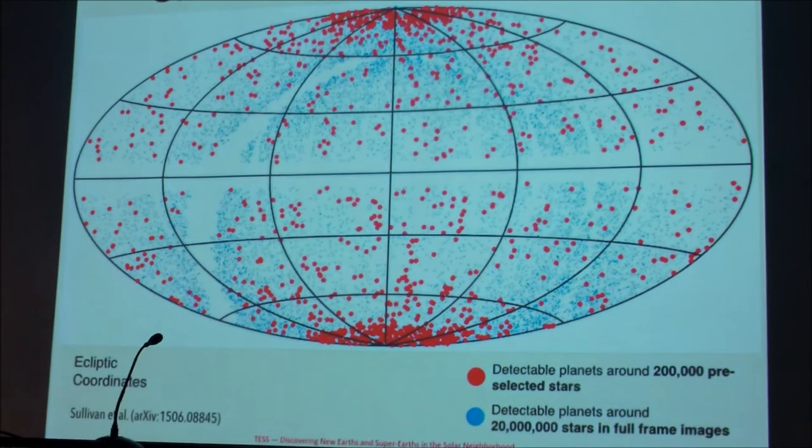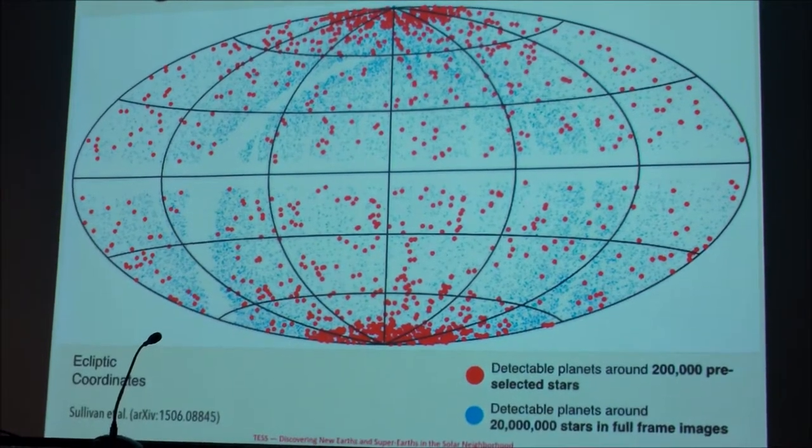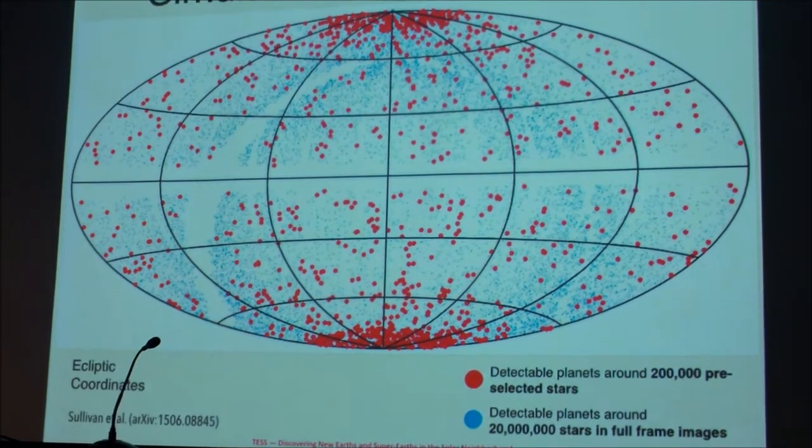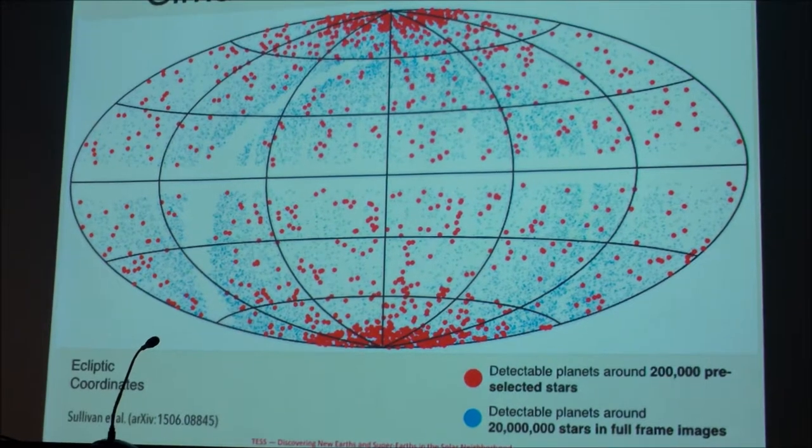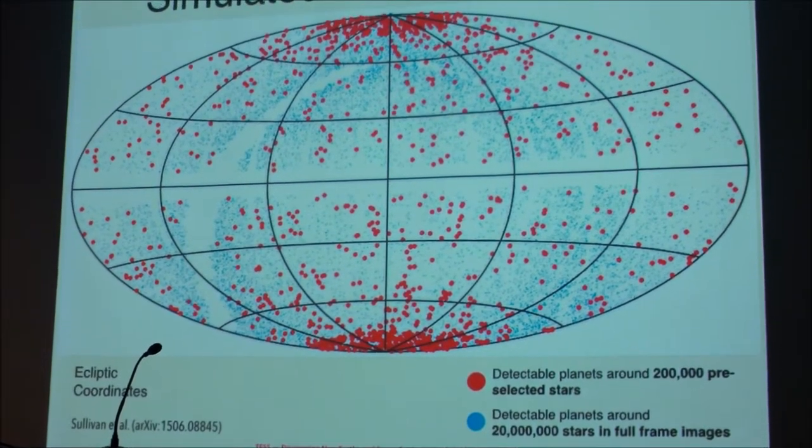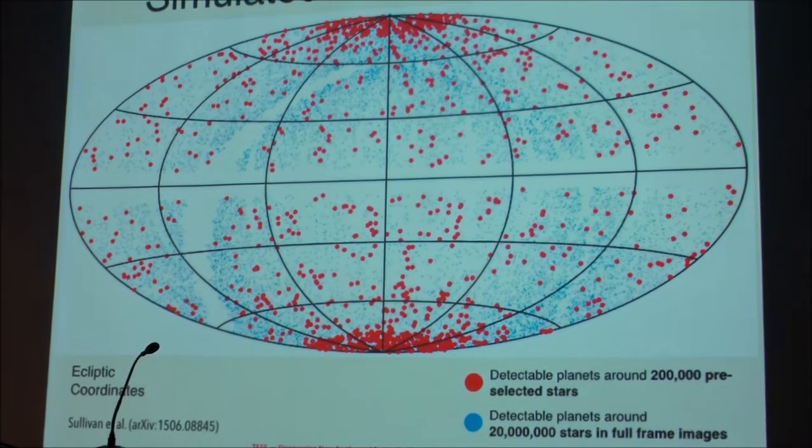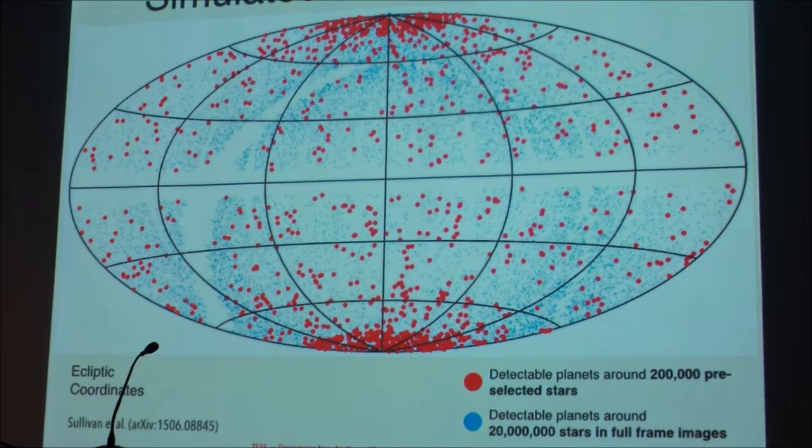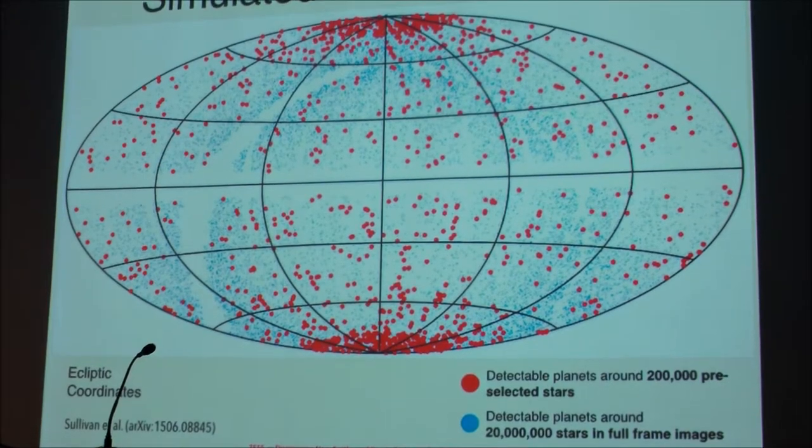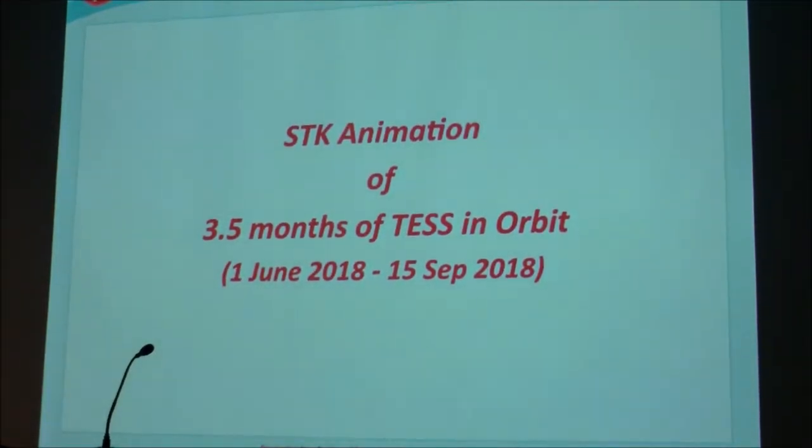Okay, so the next thing that we've done recently, and this is being redone with the candidate target list for TESS, is to simulate how the objects will be distributed around the sky. Both in terms of the ones that are for pre-selected stars, which are the red dots, and those that would be detectable planets around the 20 million stars that are going to be present in full-frame images. And that's what these little blue dots are that are scattered all around. And you can see that this is an ecliptic coordinate, so in the north and south of the pole, there are these concentration of objects. And then, for scale, there's the Kepler field.